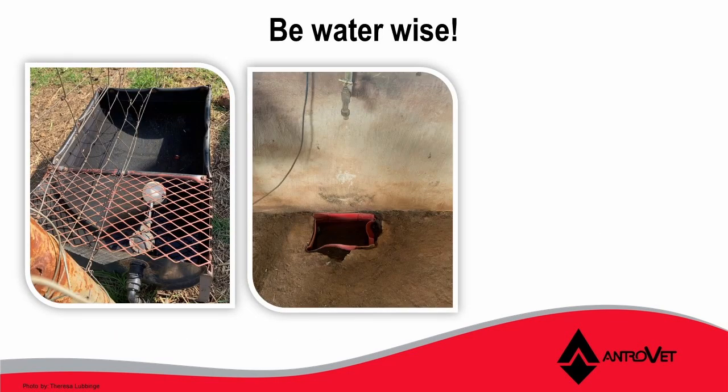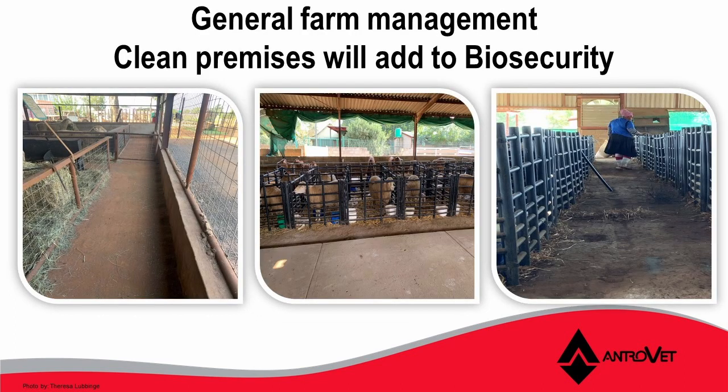Another factor to be looked at is clean water. It is of utmost importance that water troughs and feed troughs are cleaned regularly and kept clean, as this is one of the biggest ways a pathogen can enter an animal's body. General farm management and clean premises will add to your biosecurity plan, so it is very important that we keep these areas as clean and hygienic as possible.